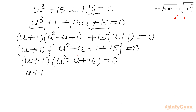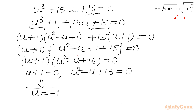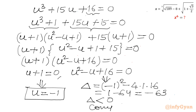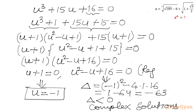The conclusion is either u plus 1 equals 0 or u squared minus u plus 16 equals 0. From the first equation, u equals negative 1. For the second quadratic, I will check the discriminant: delta equals b squared minus 4ac equals (minus 1) squared minus 4 times 1 times 16 equals 1 minus 64 equals minus 63. Since delta is negative, it will generate complex solutions, so we reject this quadratic.